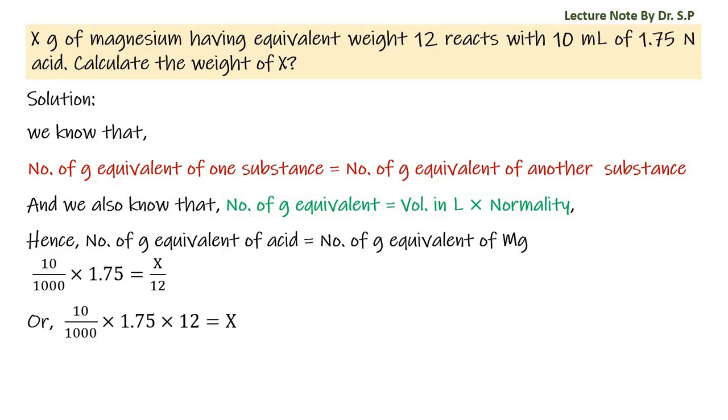Or 10 by 1000 into 1.75 into 12 is equal to X. Therefore X is equal to 0.21 grams. Hence the required weight of X is 0.21 grams.